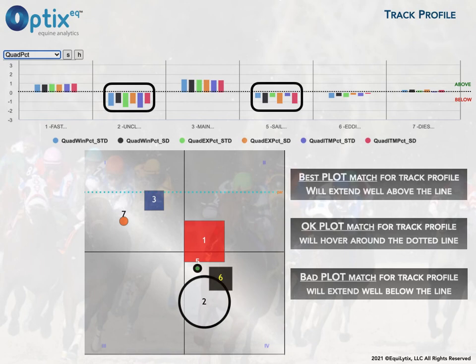Horses two and five seem up against it from a track profile perspective. Their plots and the way they're plotted — the shapes, the sizes — doesn't fit what the track profile wants. Q4 circles usually do very badly everywhere, so that's kind of obvious.